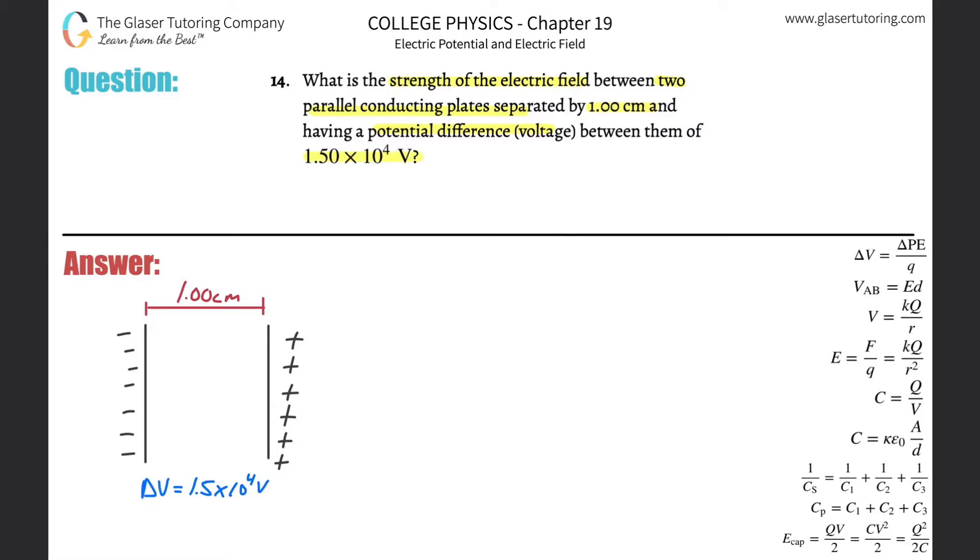All right, so first thing is here's a simple picture. We got two parallel plates. They're in black. And in order for them to have some potential difference between them, one of them has to be kind of negatively charged in relation to the other, so therefore one would be kind of positive in relation to the other. They're separated by one centimeter and the potential difference between them is going to be 1.5 times 10 to the 4 volts.